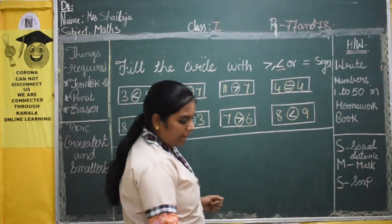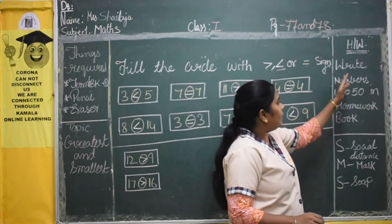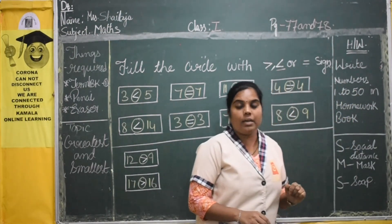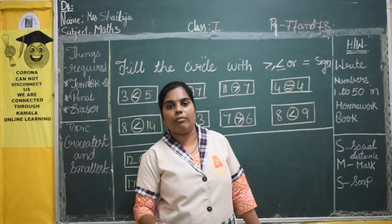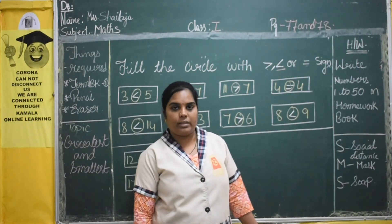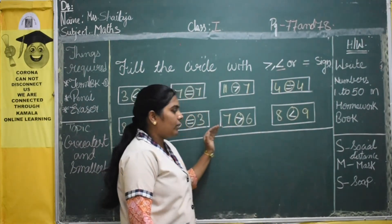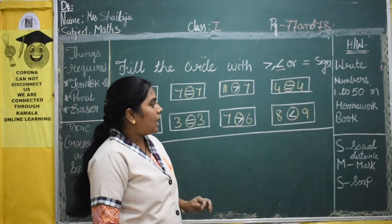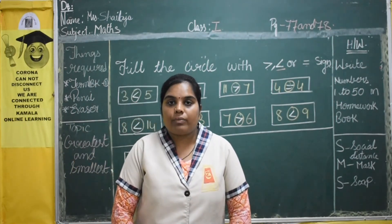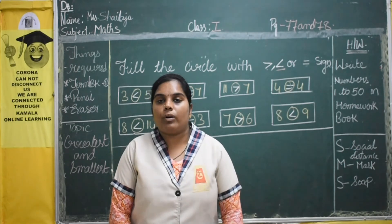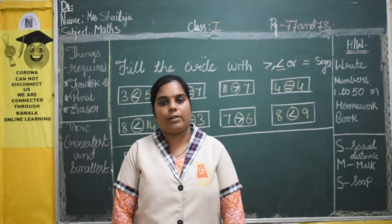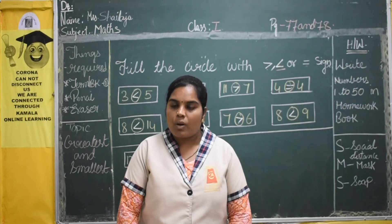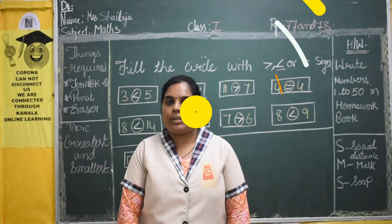Today's homework is write numbers 1 to 50 in your homework book. I hope you understood this class very well. This is the last of this section. Don't forget to do your homework, children. Visit your parents, eat more fruits and vegetables. Thank you, take care.